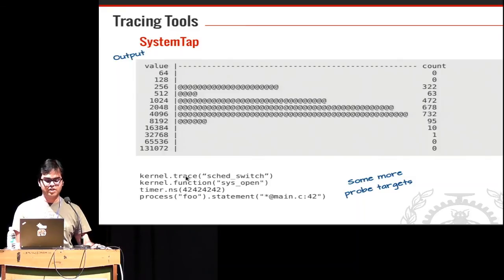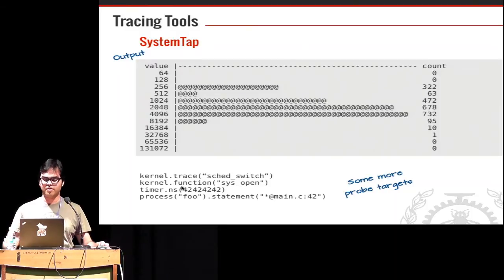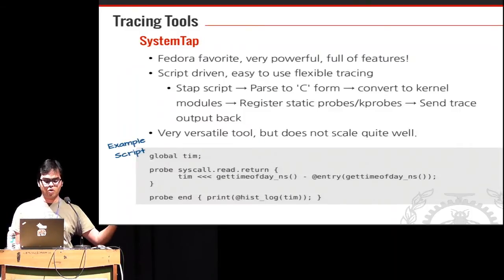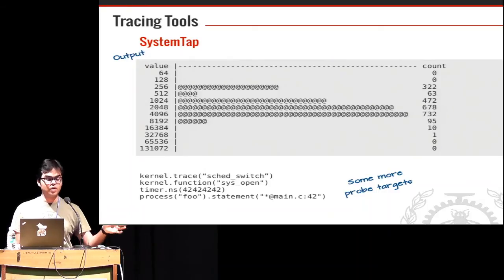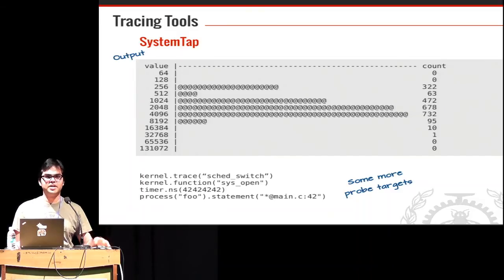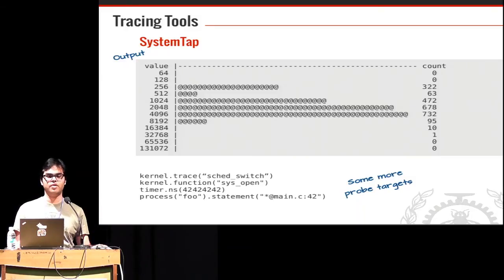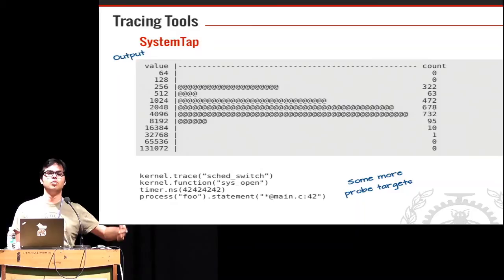SystemTap has more probes — for example 'kernel.trace' to hook onto trace points like sched_switch, or 'kernel.function("sys_open")' to put a probe on any kernel function. You can also use user space directly via DWARF-based or uprobes-based probing. You can instrument a process with 'process("foo")' and specify a source file and line location for your probe — it's a really powerful tool.